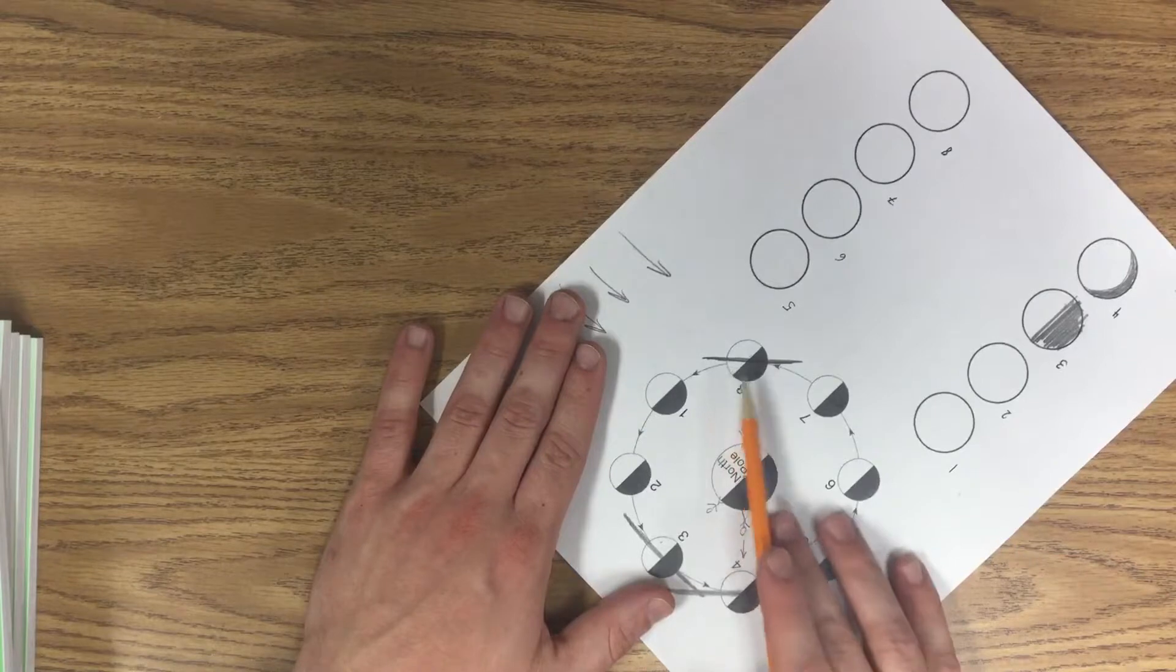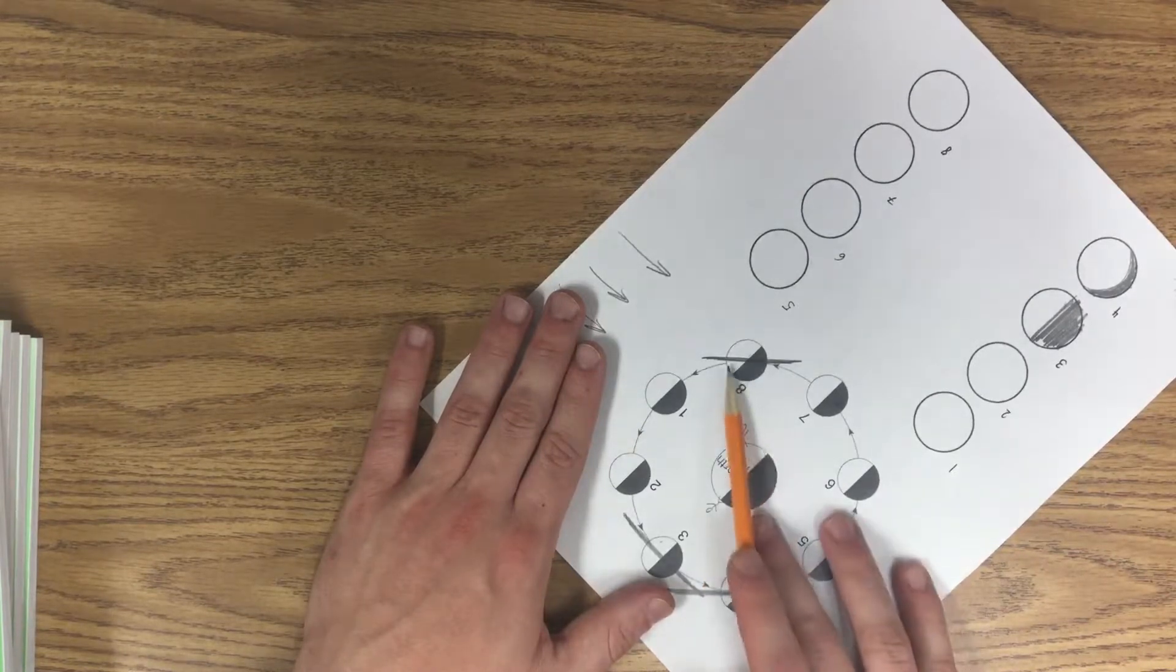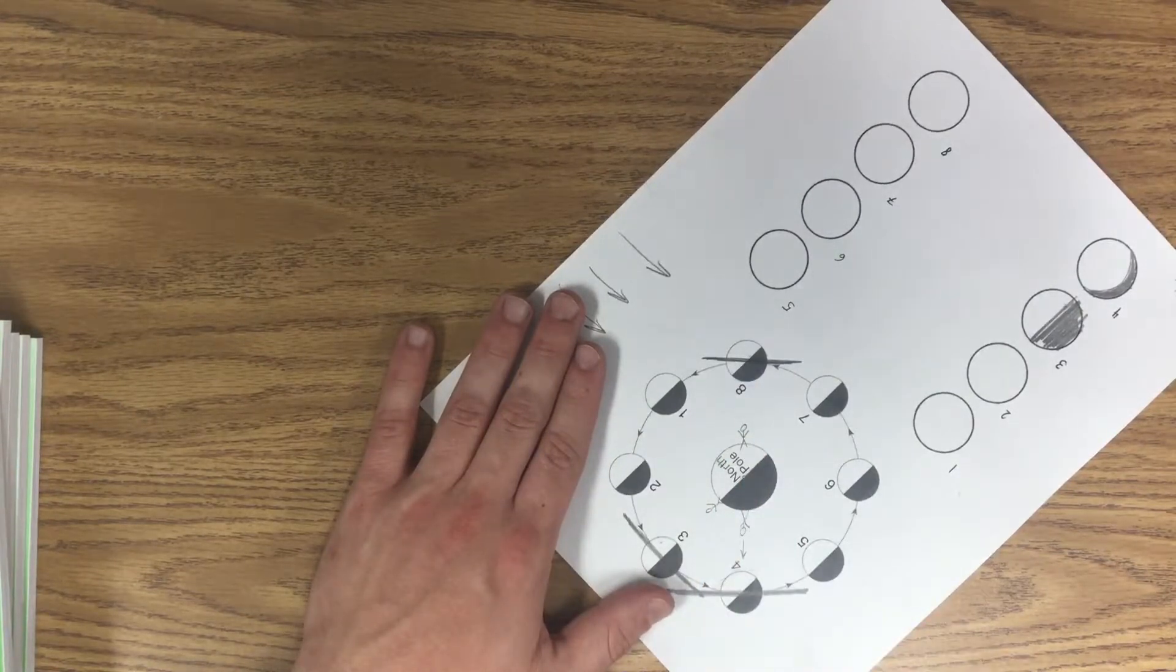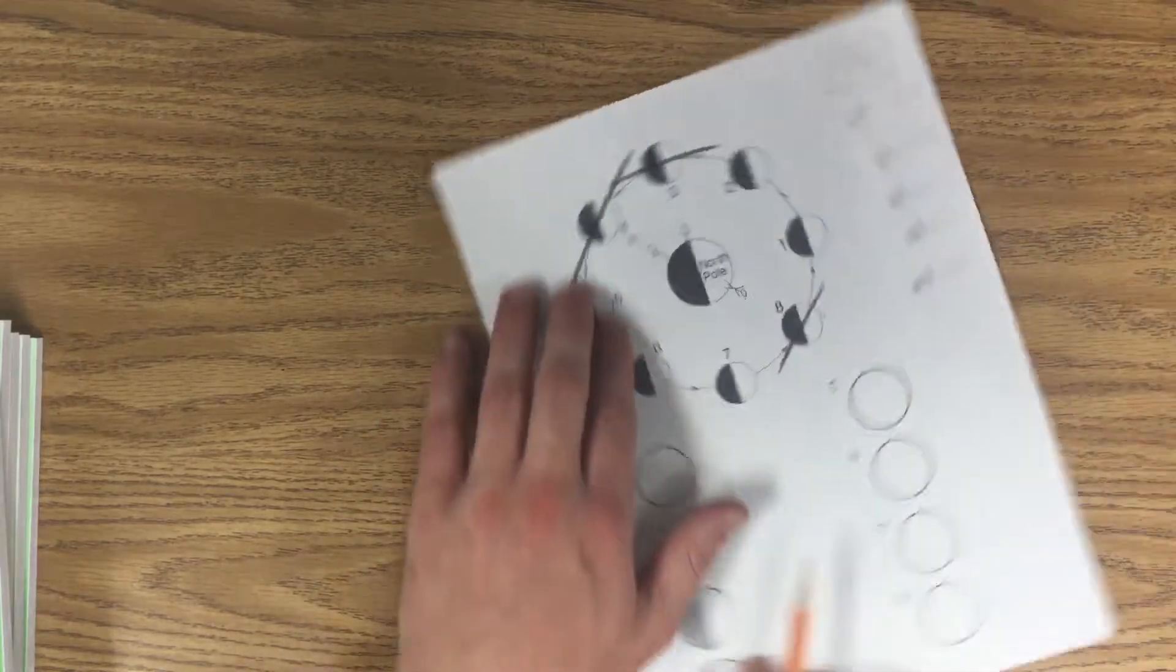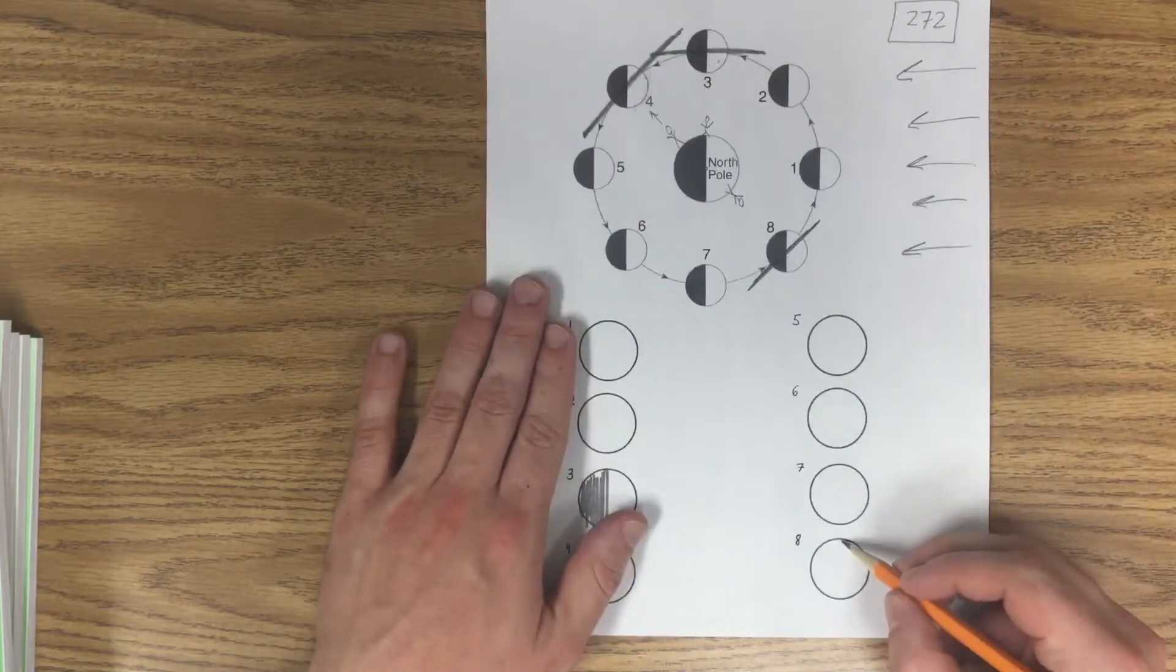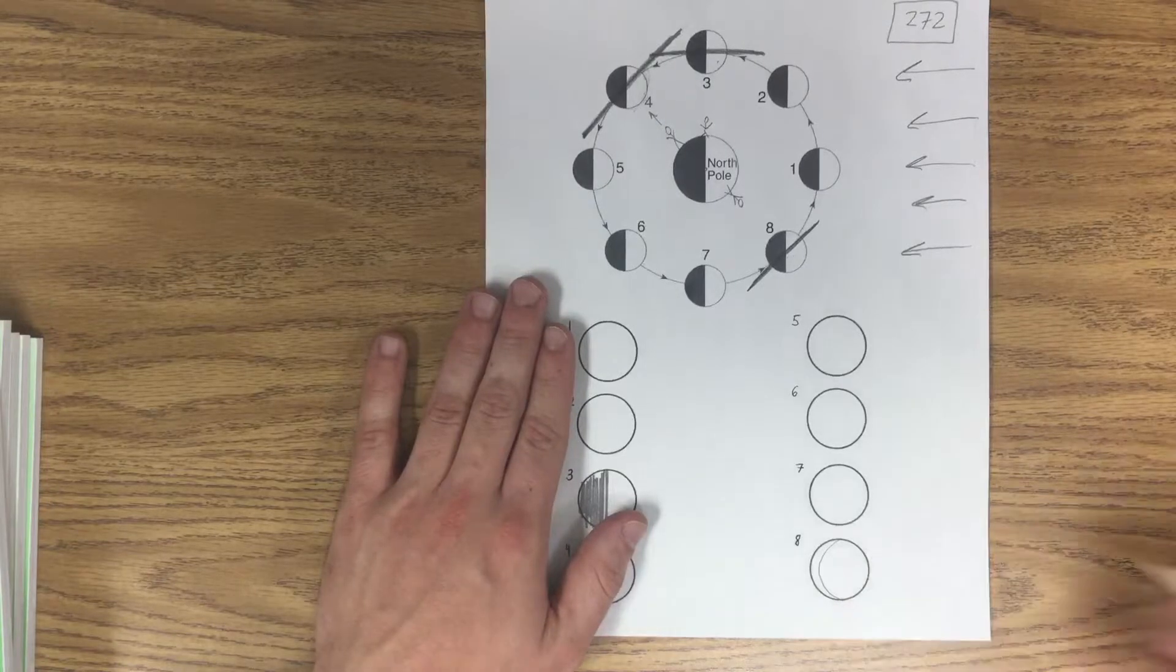Okay, so the left side is lit. Is it less than half lit, half lit, or more than half lit? It's less than half lit. So the left side is lit and it's less than half. I've got to draw my crescent in here - the left side is going to be lit and it's less than half, so I color in the right side.